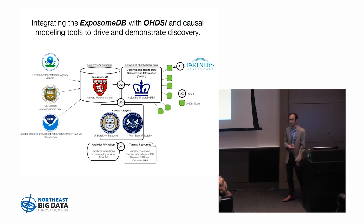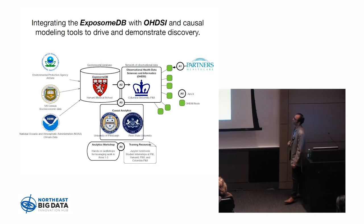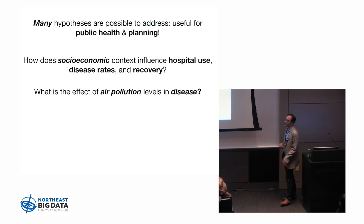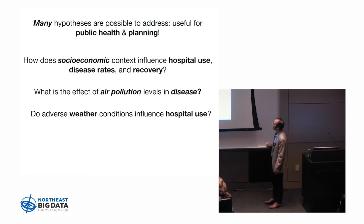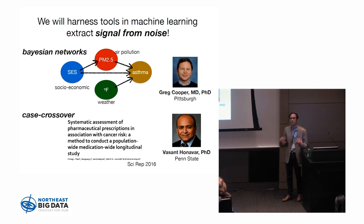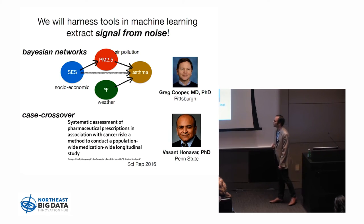This is all possible using the open infrastructure we're proposing. We're getting causal analytic tools to apply to our datasets collected at Columbia and my institution. Critical questions we want to ask include: does socioeconomic context actually influence disease rates? What's the effect of air pollution on disease as manifest in the clinical record? How do adverse weather conditions influence hospital use? And what pharmaceutical drugs lead to adverse health outcomes? We'll use tools from Greg Cooper and Vasant Honavar to deconvolve the complex web of causality, and untangle the role of time with respect to different diseases.